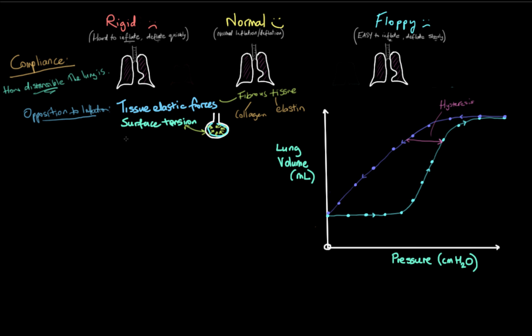We'll introduce a new term here called elastance. Elastance is the property of resisting deformation — the property of resisting the lungs being deformed from their resting state to their changed state of higher lung volume. Based on that, compliance is therefore the reciprocal of elastance — it's kind of like the opposite. So compliance equals one over elastance.